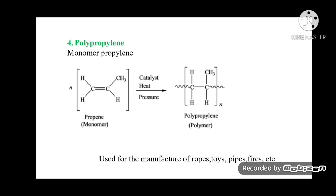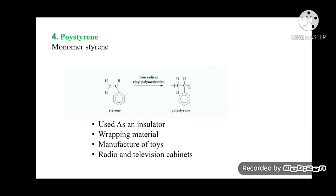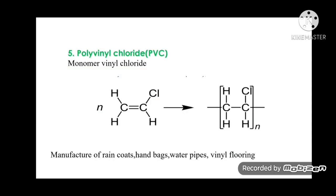Polypropylene's monomer is propylene; it is used for the manufacture of ropes, toys, pipes, and fibers. Polystyrene's monomer is styrene; it is used as an insulator, wrapping material, and for manufacture of toys, radio, and television cabinets. Polyvinyl chloride (PVC), whose monomer is vinyl chloride, is used in manufacture of raincoats, handbags, water pipes, and vinyl flooring.